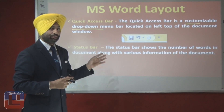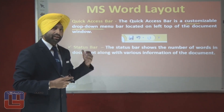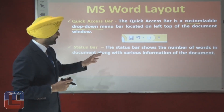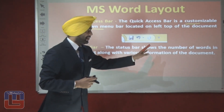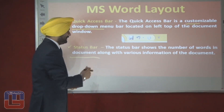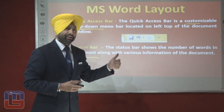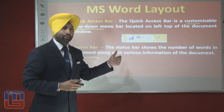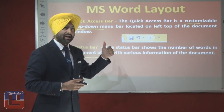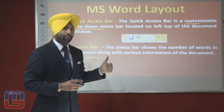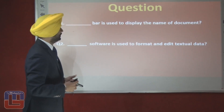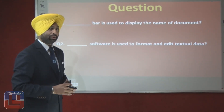The status bar holds the page number you are currently viewing and other information regarding that document. To recap: the status bar shows the number of words in the document, the page number, the point at which you are located, and it is located at the bottom of the document window.